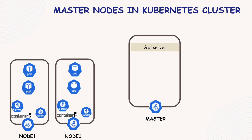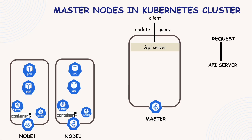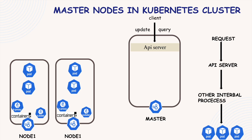The first and most important component is the API server. Whenever you as a user or developer want to deploy a new application or make any changes to the cluster, you send that request to the API server. You can use a command-line tool like kubectl, a web UI like the Kubernetes dashboard, or interact with the Kubernetes API directly. The API server acts as a gateway to the cluster — it is the entry point for all communication, whether you are creating pods, services, or deployments, or just checking the health of your cluster. It also handles authentication and authorization, meaning it checks whether your request is allowed. It validates the request and then passes it on to internal services for execution. This single entry point is great for security and cluster consistency.